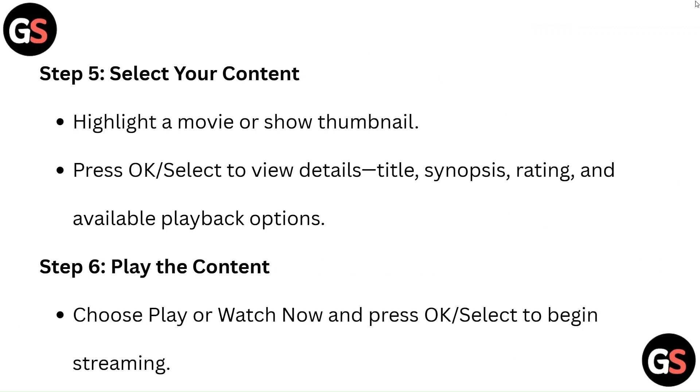Step 5: Select your content. Highlight a movie or show thumbnail, then press OK or Select to view details including the title, synopsis, rating, and available playback options.